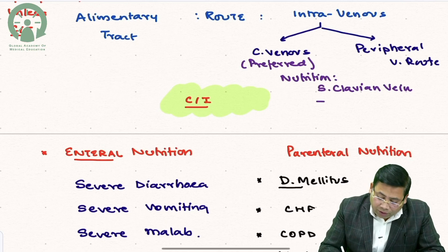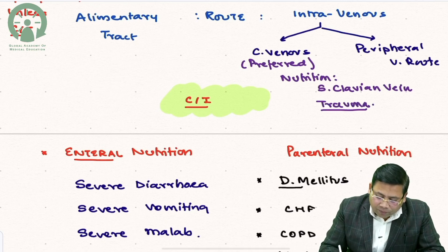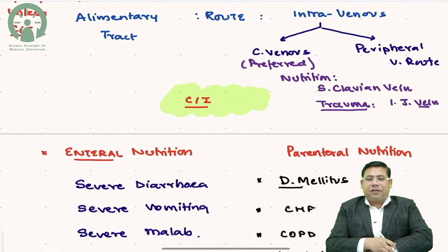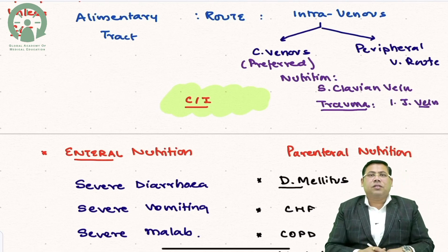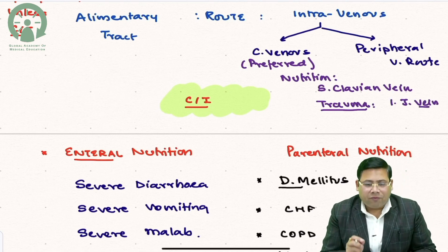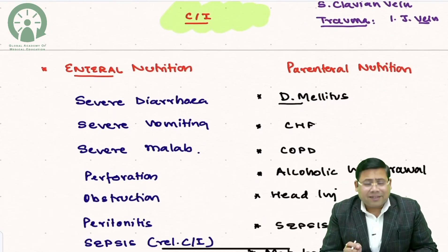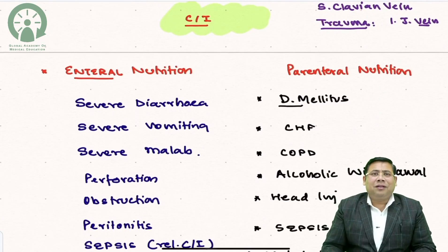In trauma situations where access needs to be quick, the internal jugular vein is preferred over the subclavian vein. This distinction between internal jugular and subclavian is very important to remember.